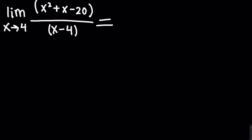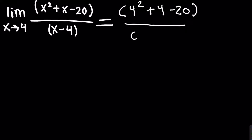The first thing you need to do when you solve any limit is take the value that x approaches — in this case, x is approaching 4 — and plug it into our function. So we have 4 squared plus 4 minus 20 over 4 minus 4. This simplifies to 16 plus 4, which is 20, and 20 minus 20 is 0. On the bottom, 4 minus 4 is also 0. So we have 0 over 0, which means we're in indeterminate form.